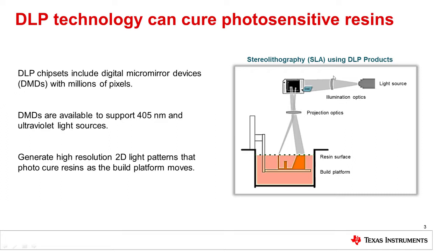DLP chipsets can support light sources with a wide range of wavelengths, ideal for existing resins and new resin formulas being introduced that have specific optical, mechanical, and thermal properties when cured.